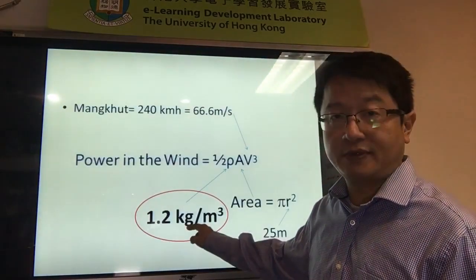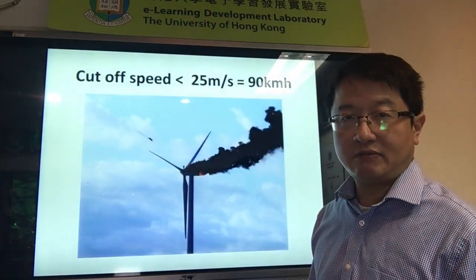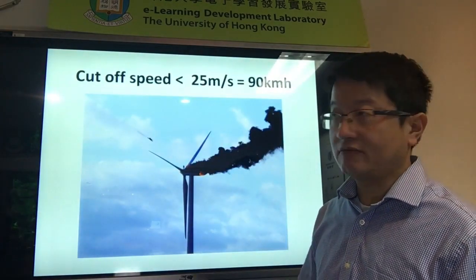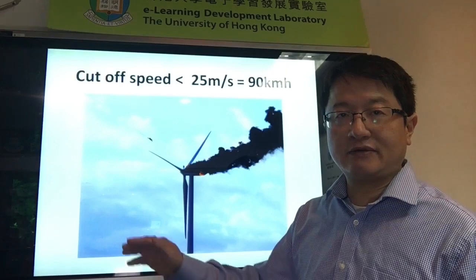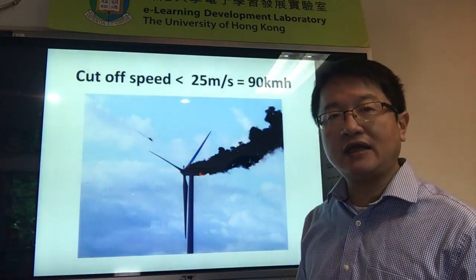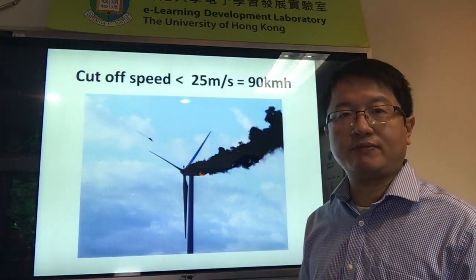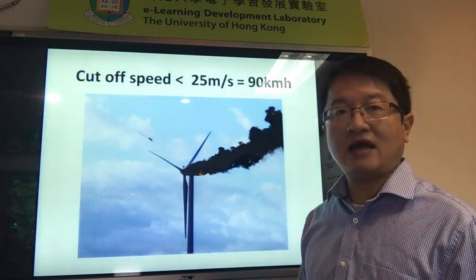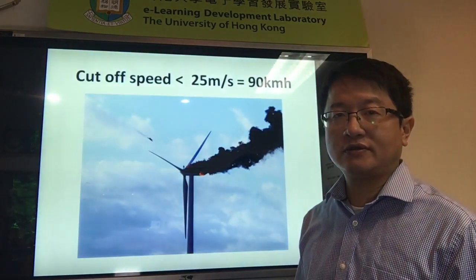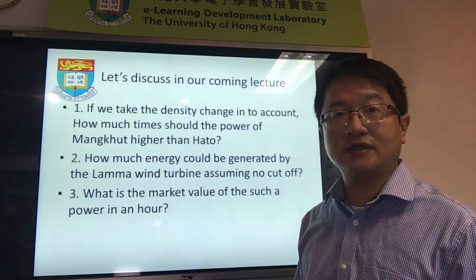So the value of 1.2 kilograms per meter cubed is not exactly correct — this number should be lower because of the lower pressure. Moreover, there is a cut-off speed: when the wind speed exceeds 25 meters per second, or equivalent to 90 kilometers per hour, the wind turbine has to be stopped. Otherwise, the wind turbine may be damaged. Therefore, there are many other factors that we need to consider.